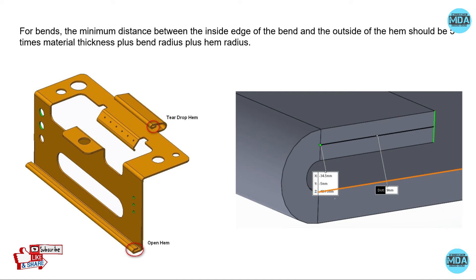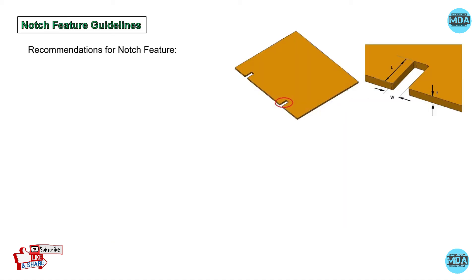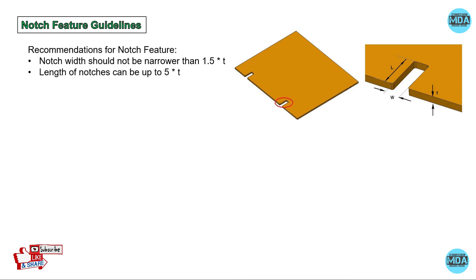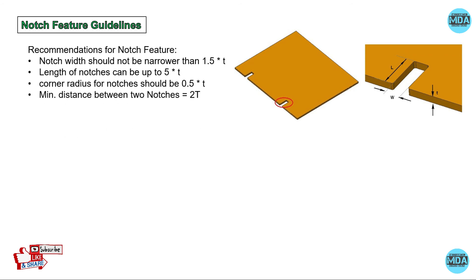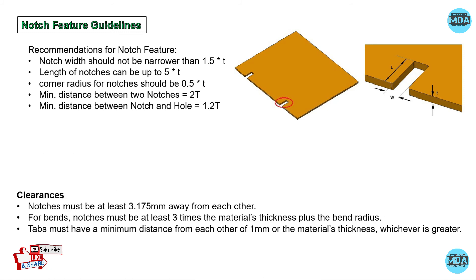For notch feature guidelines: the width should not be narrower than 1.5 times thickness, the length of a notch should be up to five times thickness, and the corner radius of notches should be 0.5 times thickness. The minimum distance between two notches should be two times thickness, the minimum distance between a notch and a hole should be 1.2 times thickness, and notches must be at least 3.175 mm away from each other. For a bend, notches must be at least three times material thickness plus the bending radius.